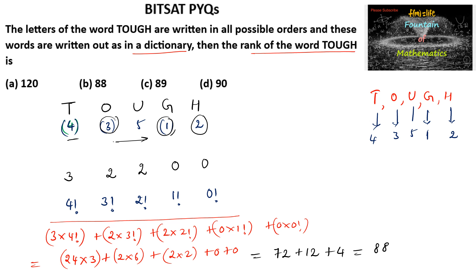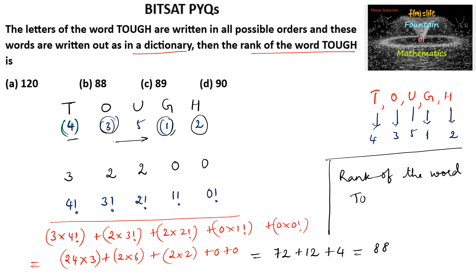There are 88 words before TOUGH in dictionary order. The rank of the word TOUGH is 88 + 1 = 89. So 89 is the answer, which is option C.